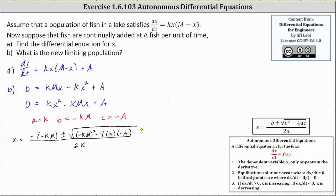Now let's begin simplifying. We have x equals km plus or minus the square root of k squared m squared, and then plus four ka. And all this is divided by two k.